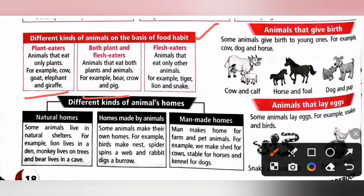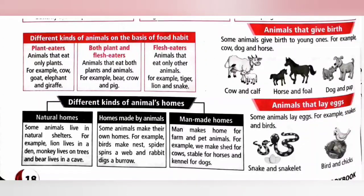To summarize: plant-eating animals are herbivores, both plant and flesh-eating animals are omnivores, and flesh-eating animals are carnivores.